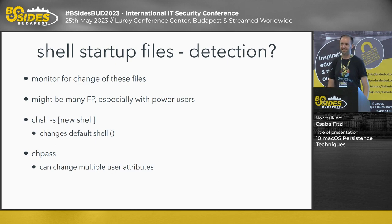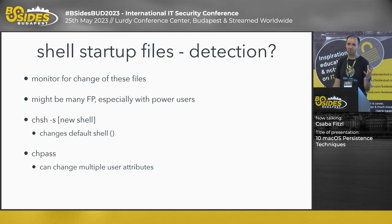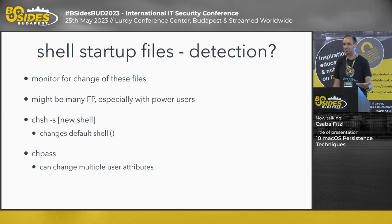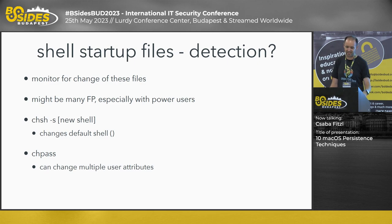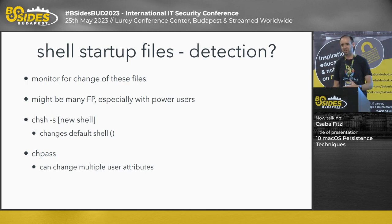How can we detect this as blue teamers? Probably the simplest approach is to monitor for changes to these files. There might be many false positives because power users might use them for legitimate reasons to set up their configurations. But still, that's probably the most obvious detection method. We can also monitor for CHSH execution, which can change the default shell on macOS, and also the chpass executable.